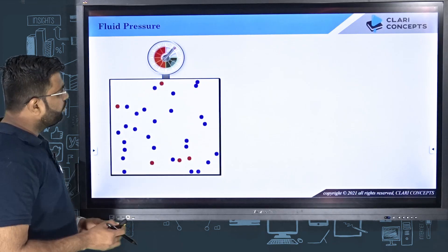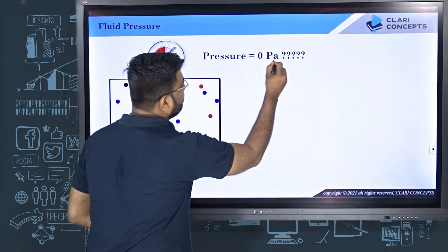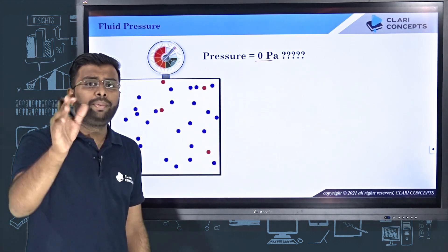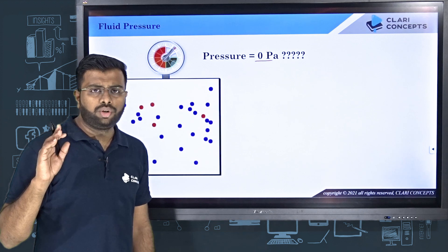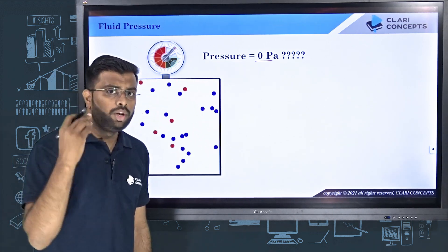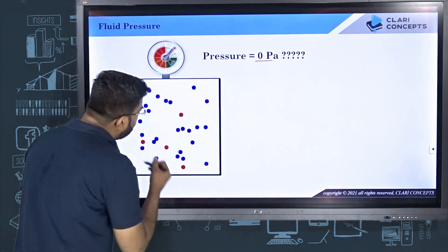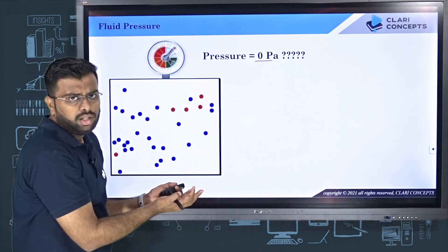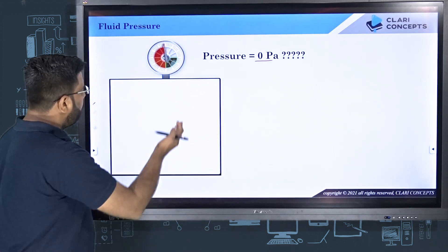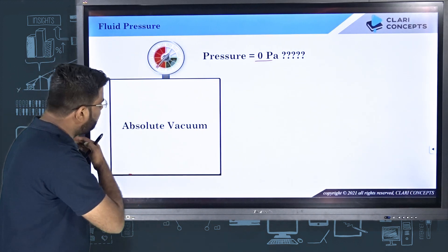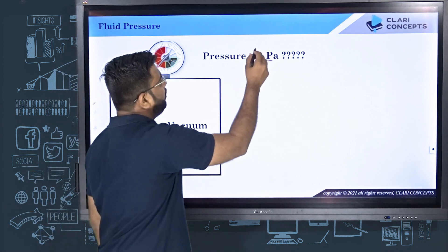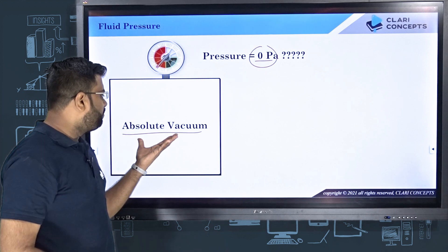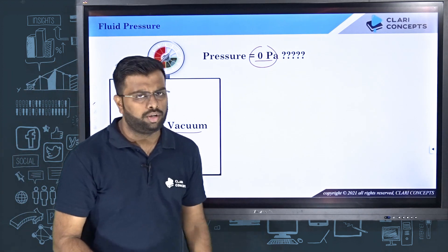Now let me ask you: can pressure go to 0 Pascal? This could be 0 Pascal when the impact force is 0. The impact force is 0 when there are no molecular collisions — meaning no molecules present in the fluid, meaning no fluid is present in the container. That means when it is absolute vacuum, in this condition you will have 0 Pascal pressure. So absolute 0 Pascal pressure means there is total vacuum in the container and no molecules present at all.